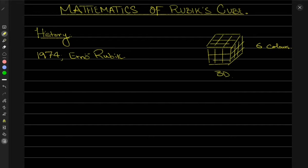The cube was launched to the entire world in around 1980, and as soon as it was made available to the public it immediately gained quite a lot of popularity. Since its launch, hundreds of millions of cubes have been sold to this day, and it became one of the best-selling puzzles as well.